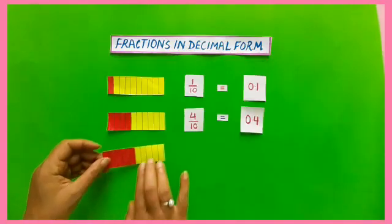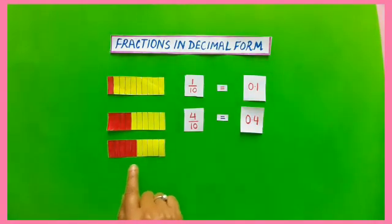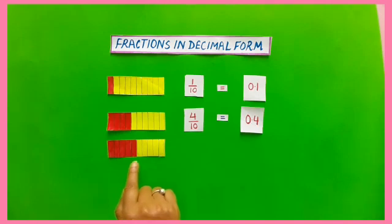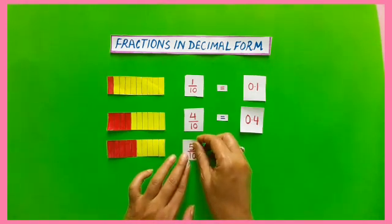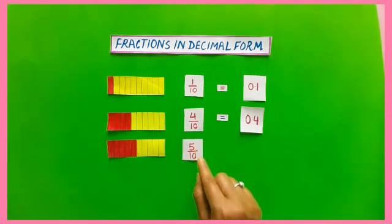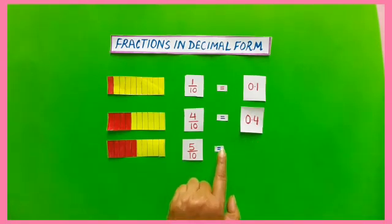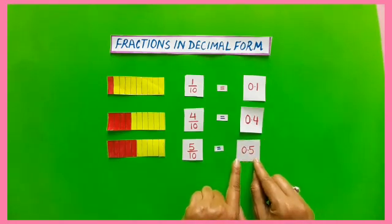Let us take one more example. This is also a rectangle and it is again divided into 10 equal parts. In this, 5 parts are colored red. The fraction of this is 5 by 10, and this fraction is equal to its decimal form as 0.5.